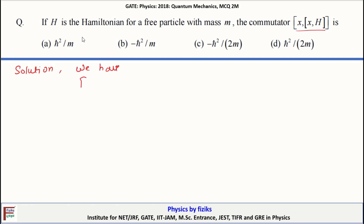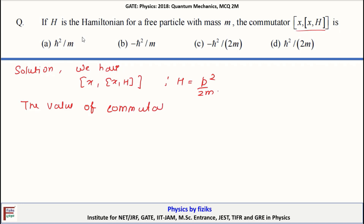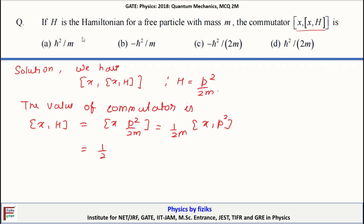We define X-dot as the commutator of X with H. For a free particle, H is defined as P-squared over 2M. The value of the commutator [X, H] equals [X, P²/2M], which equals 1/(2M) times [X, P²]. One can solve this as 1/(2M) times [X, PP].